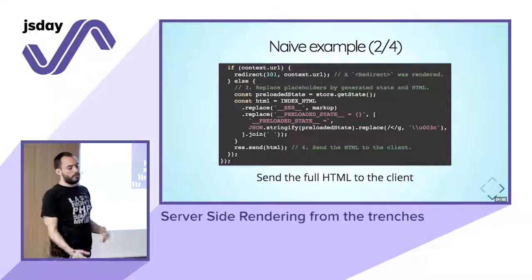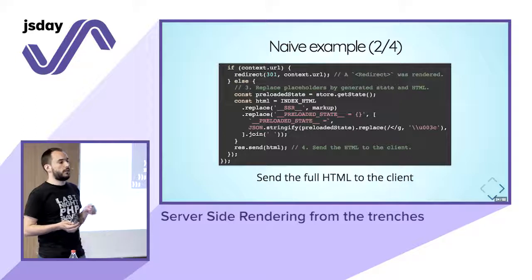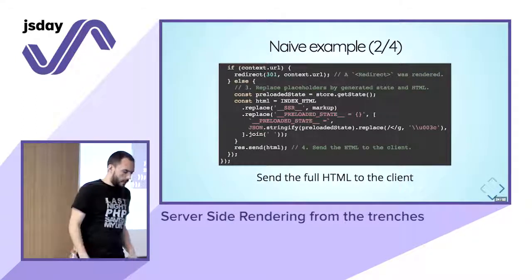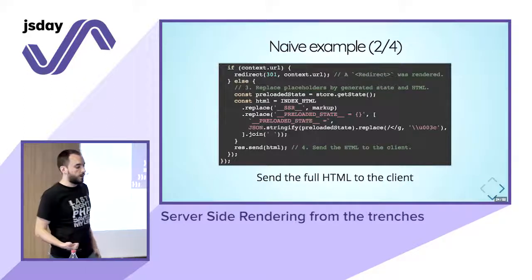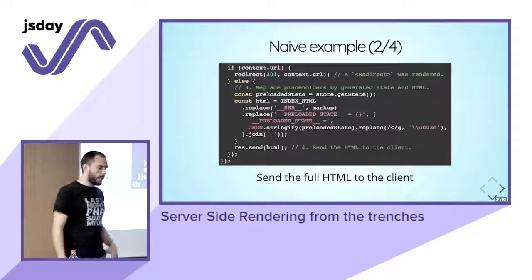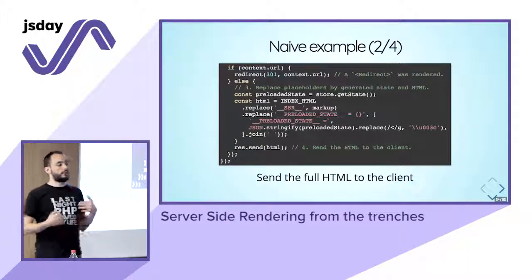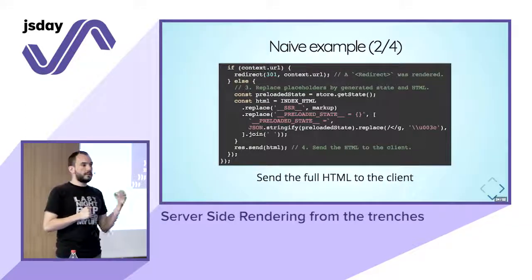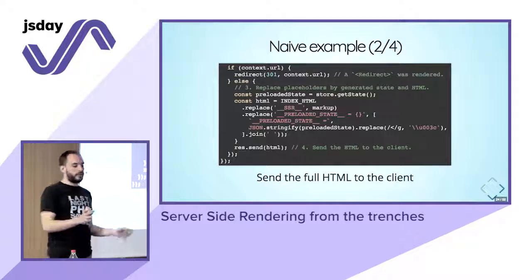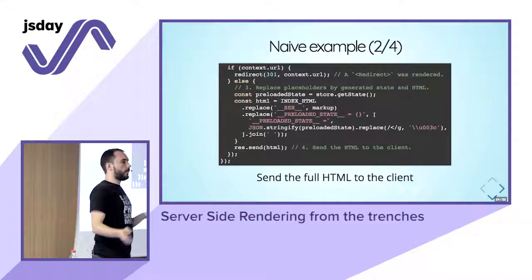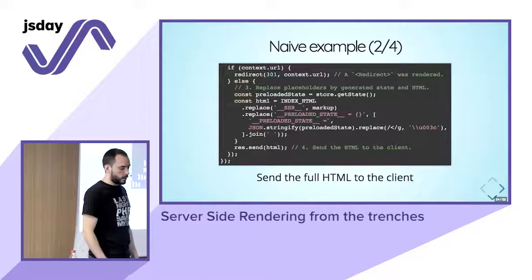The next step is to make sure there is no redirect. In the browser, if you want to make a redirect, it's pretty easy: window.location equals the new path and that's it. But it doesn't work like that on the server — a server redirect is an HTTP response with an HTTP header, 301 or 302, with the path. So you have to deal with this on the server. Then if you don't have a redirect, you are able to render and return the HTML.